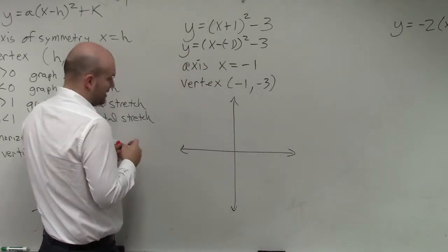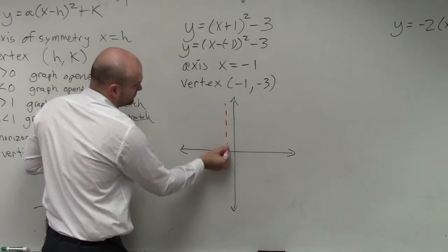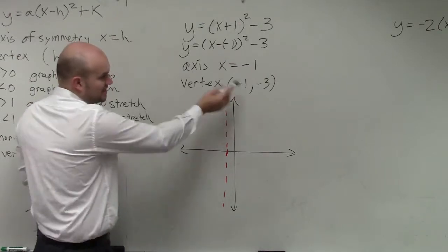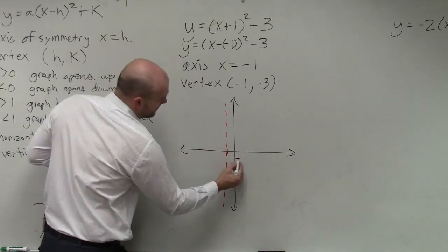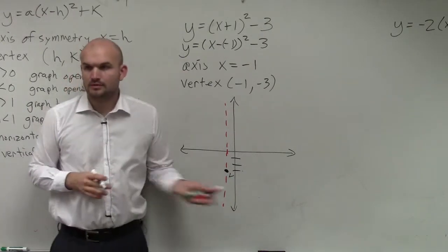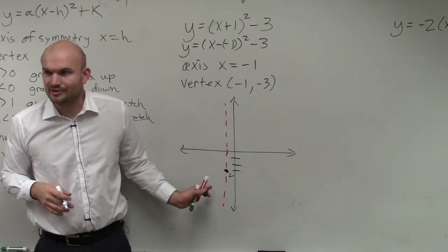So all I'm going to do is I'm going to draw my vertex of symmetry, which is at negative 1. And then I'm going to find my vertex, which is at negative 1, negative 3. You guys see how easy that was to find that? There's very little math that really had to be done.